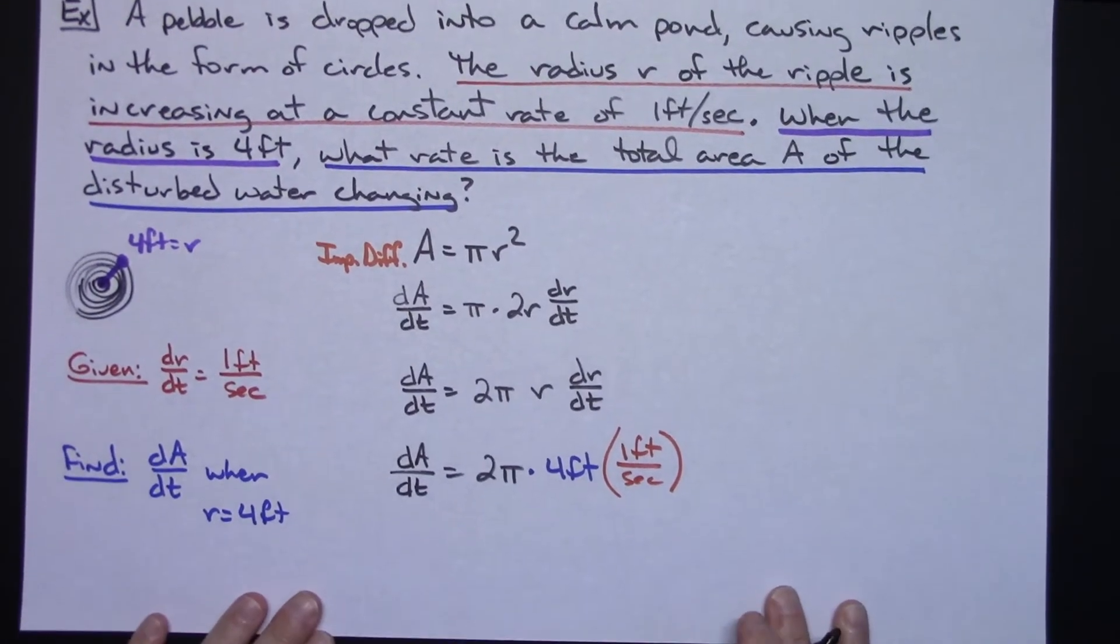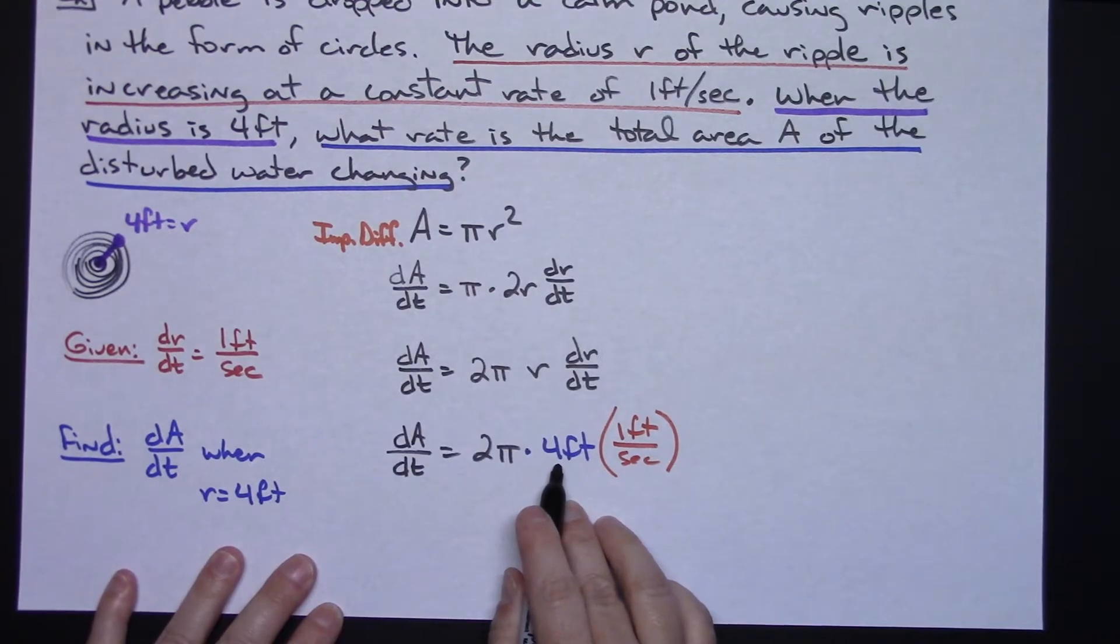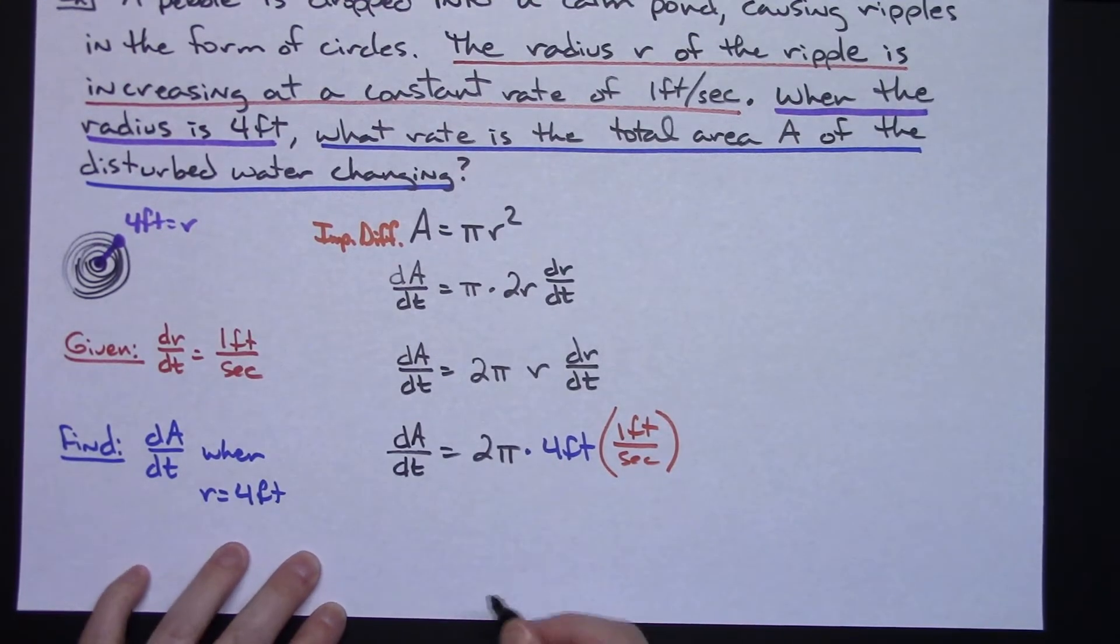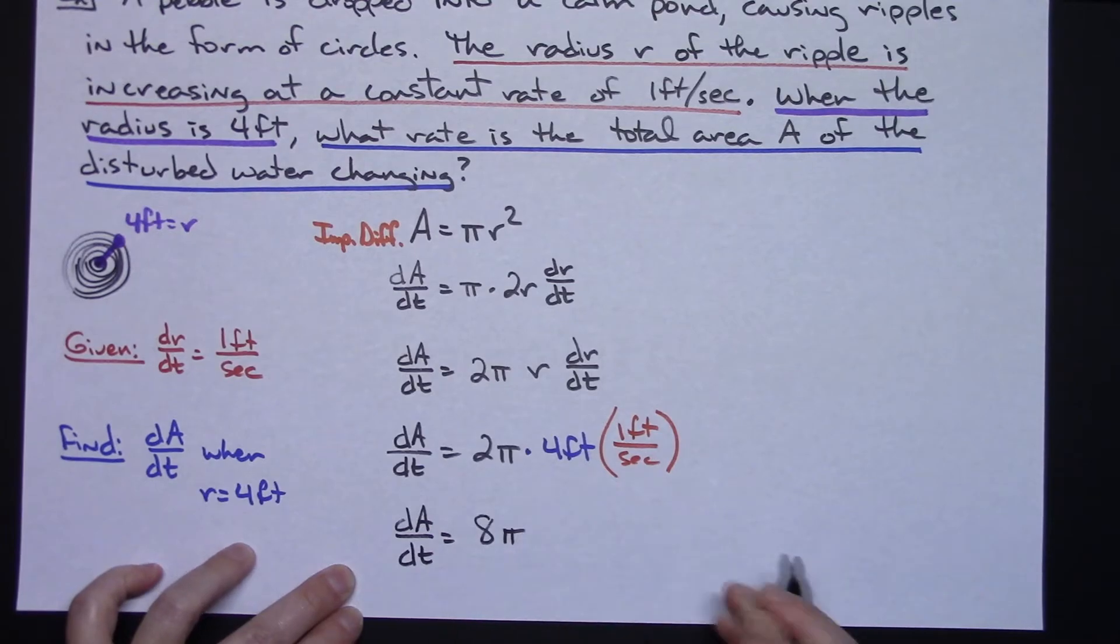Right now it's a matter of going through and simplifying and see what we've got here. I've got a 2 pi and a 4 I can multiply all that out and get an 8 pi right there.